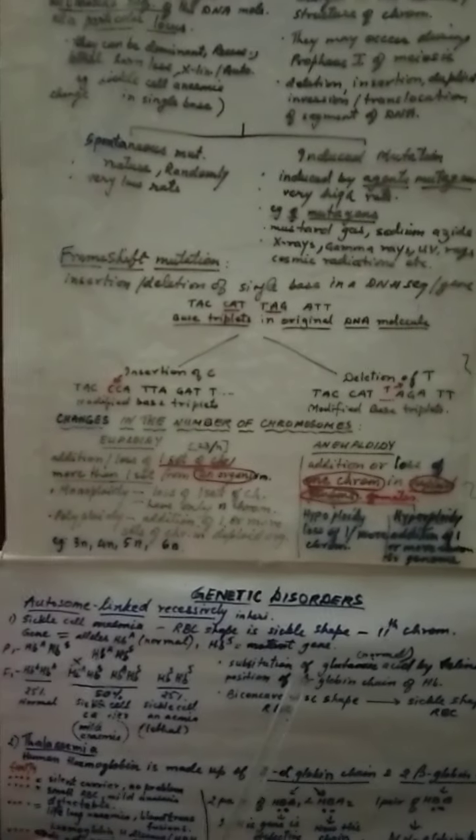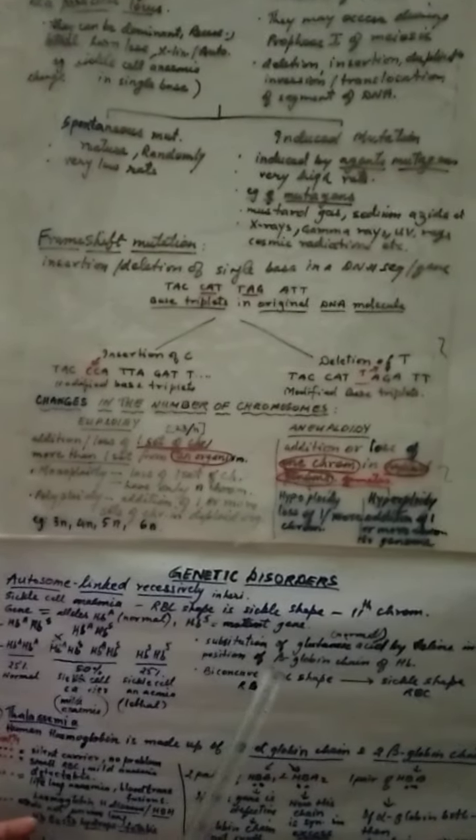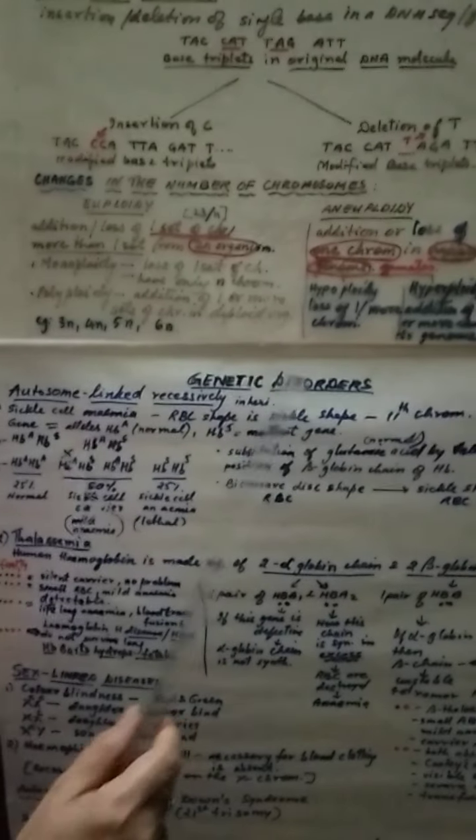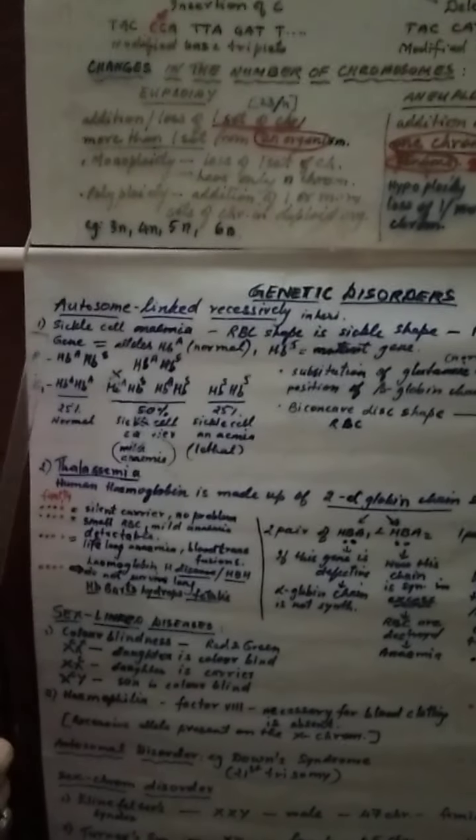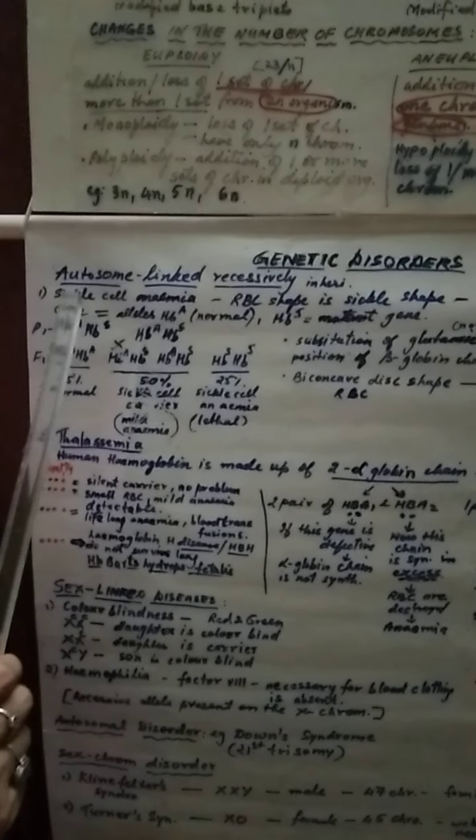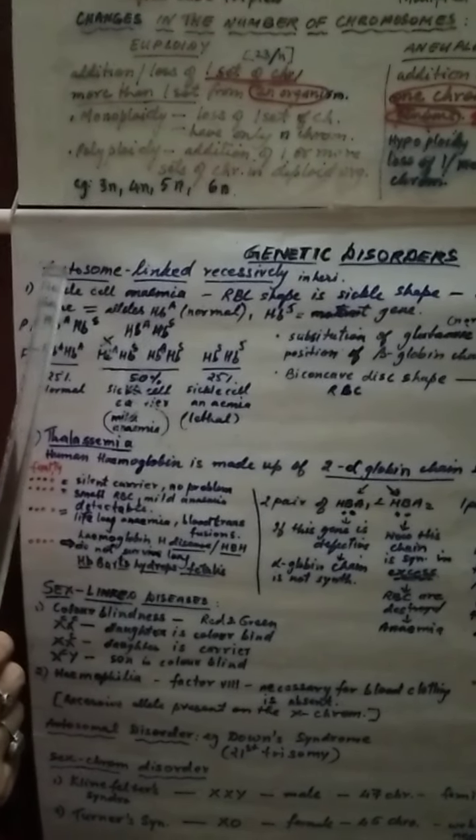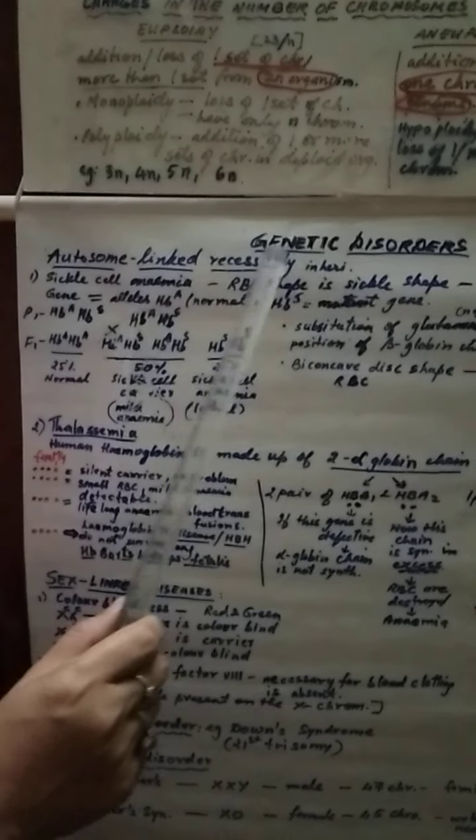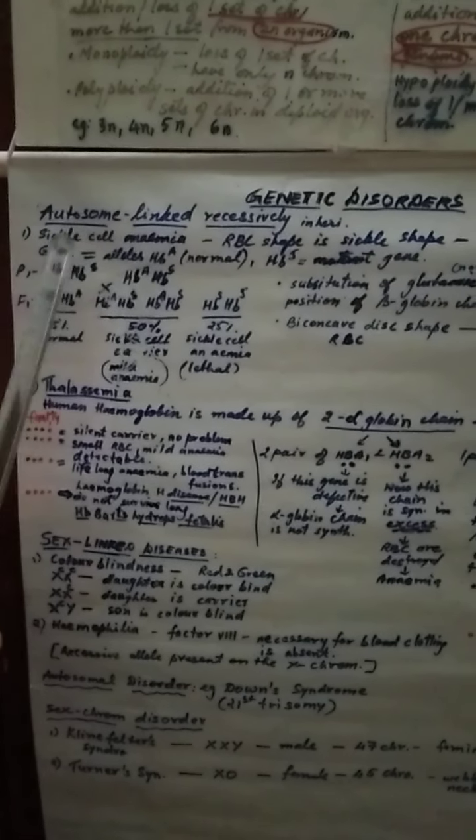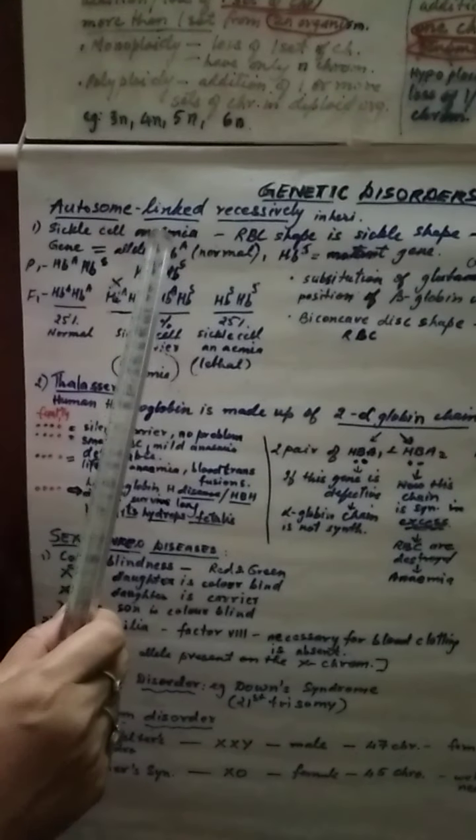Now related to mutation, we have seen the mutation brings disorders usually. We are going to see some examples under the heading genetic disorders. You know what are autosomes? So we are going to see some defects in autosome due to mutation. Autosome linked recessively inheritance. The best example is sickle cell anemia.